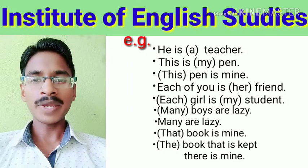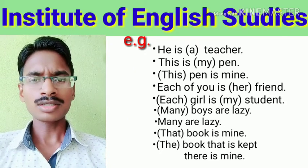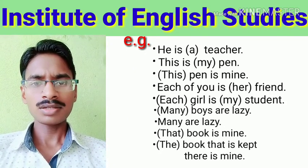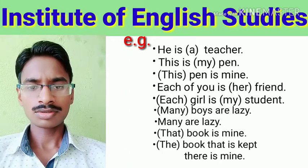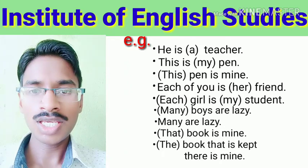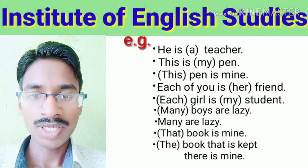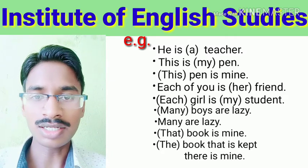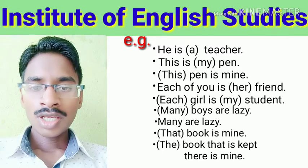In 'This pen is mine', 'this' is the determiner and 'pen' is the noun. In 'Each of you is her friend', 'her' is the determiner and 'friend' is the noun.